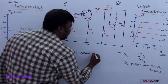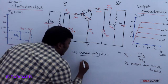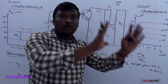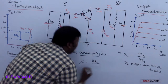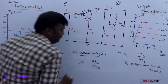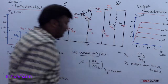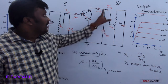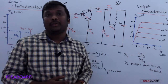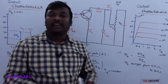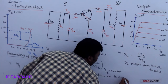The third important parameter is current gain. In common emitter configuration the current gain symbol is beta (β). Gain means output-to-input ratio, so β = ΔIC / ΔIB at constant VCE. At constant VCE, the ratio of change in collector current to change in base current is called current gain. Beta values lie between 20 and 200.